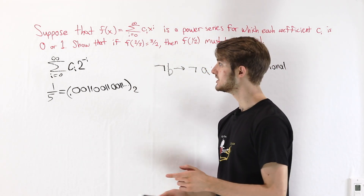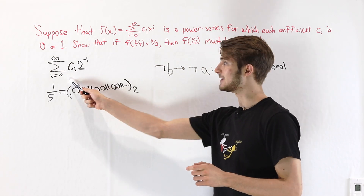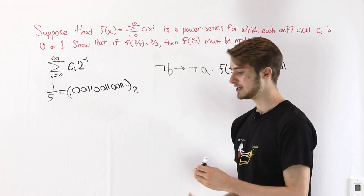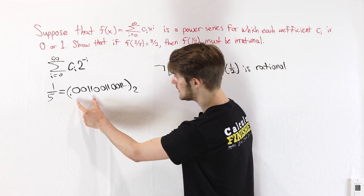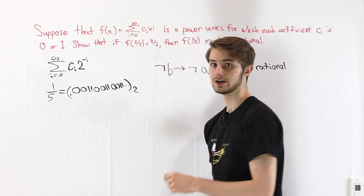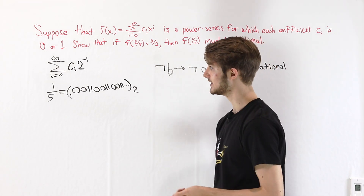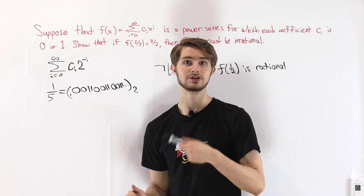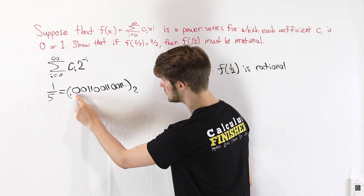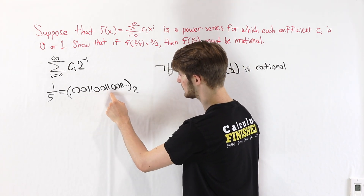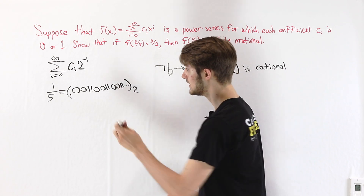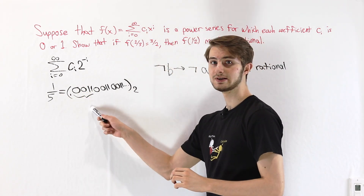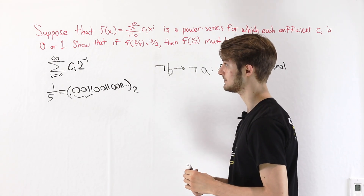That means we're dealing with a repeating binary expansion as well. If we're looking at a repeating expansion, there must be some sequence that repeats over and over again. In this case, 1/5 is rational, and the sequence that's repeating is 0011, 0011, 0011 — this sequence gets repeated infinitely.